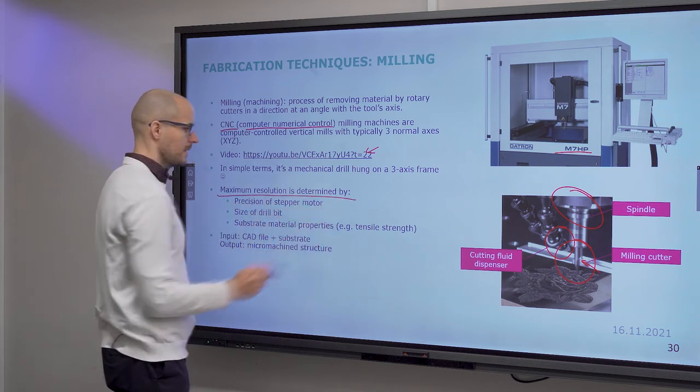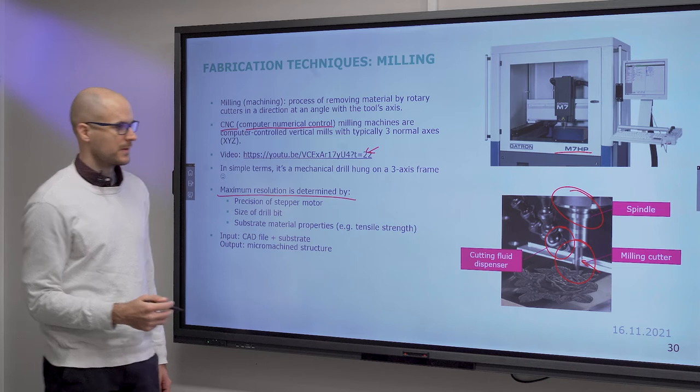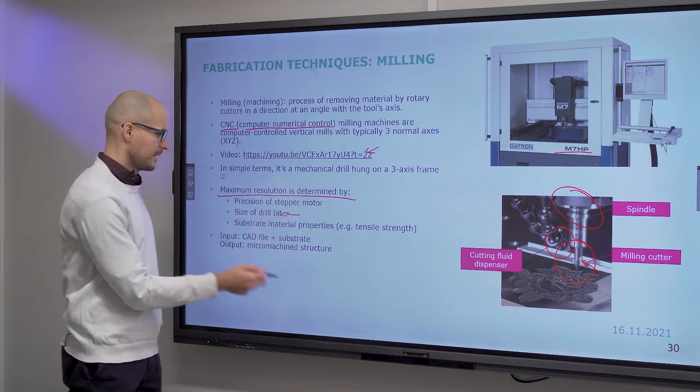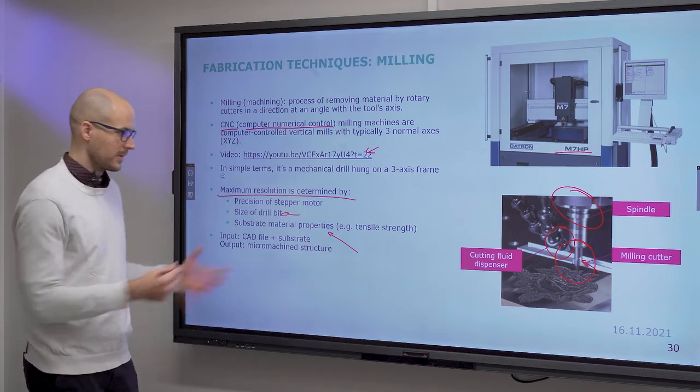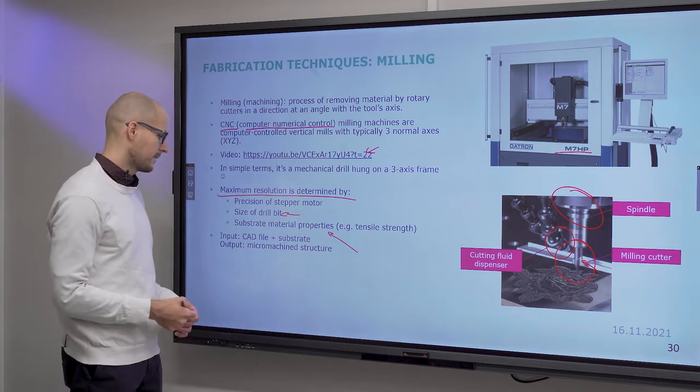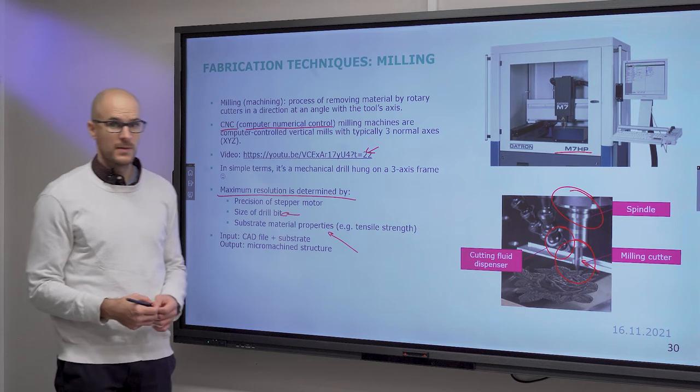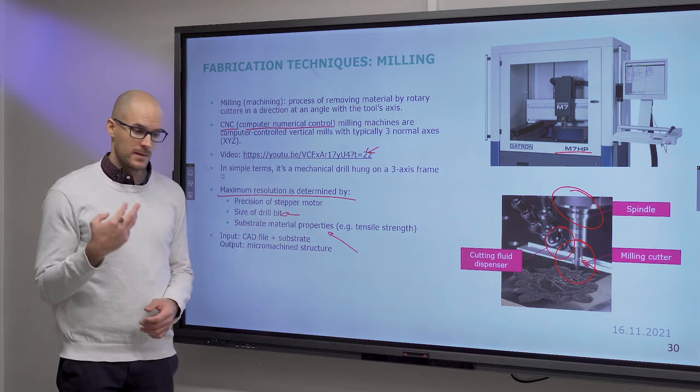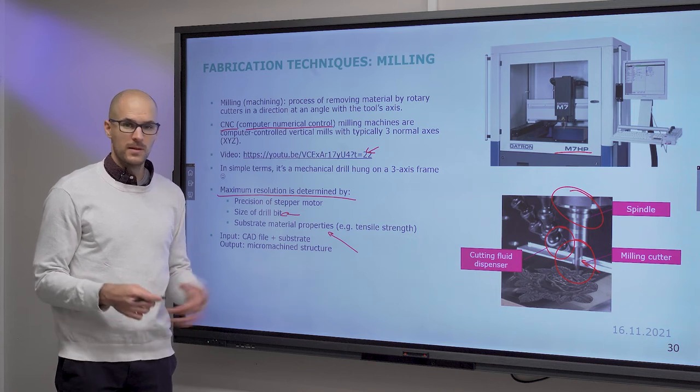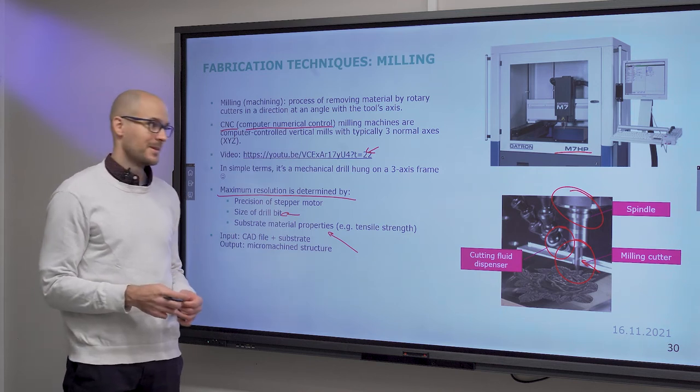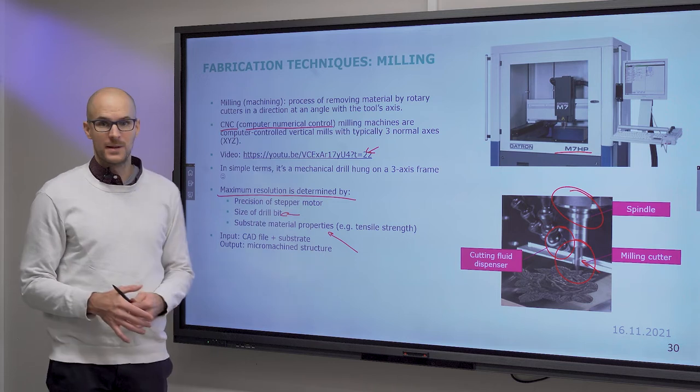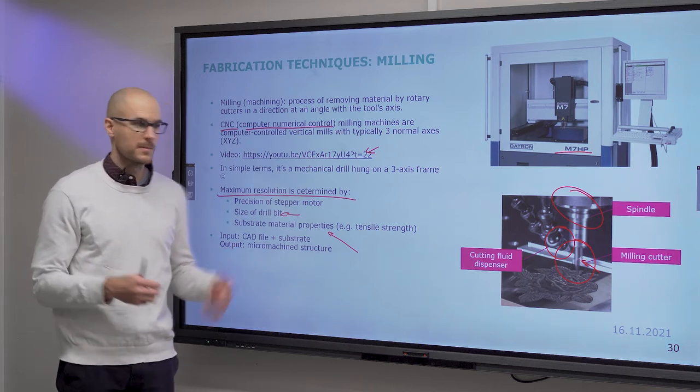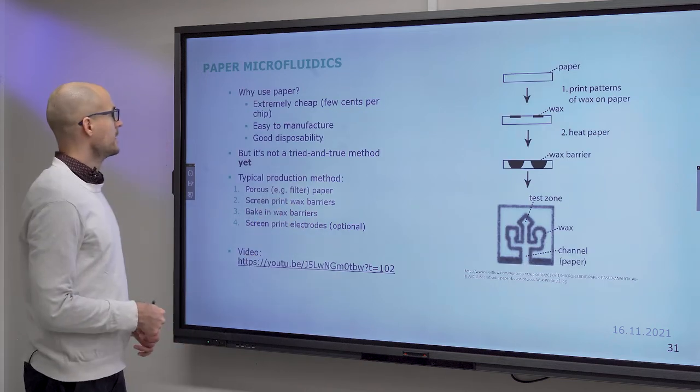Maximum resolution is determined by the precision of the stepper motor of the robotic frame. Size of the drill bit. And the substrate properties. So, the material properties that you cut. The input that you need to provide is a CAD file. And of course, what you need to get cut. But after that, somebody who knows how to work with milling machines needs to also make the CAM file. Which defines the drill speeds and so on.